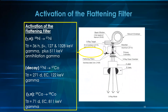Now we will discuss activation of the flattening filter. The flattening filter is made of nickel, with a half-life of around 36 hours, and can produce beta-positive particles of 127 to 1328 keV gamma, plus 511 keV annihilation gamma. The decay chain also includes nickel to cobalt-57. Another possibility is cobalt-59 converting to cobalt-58.